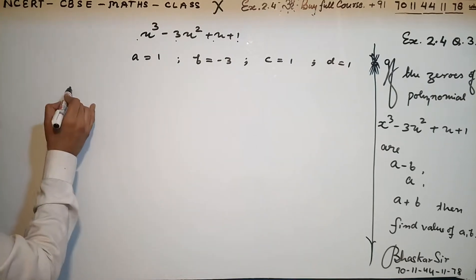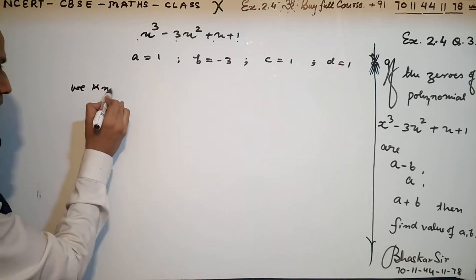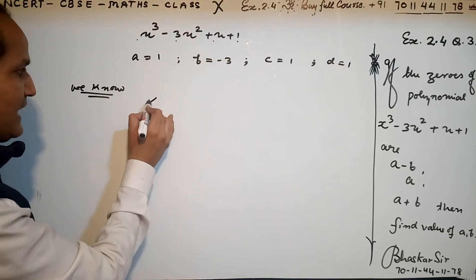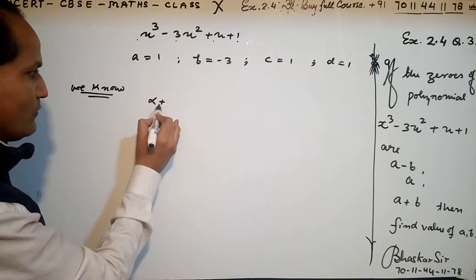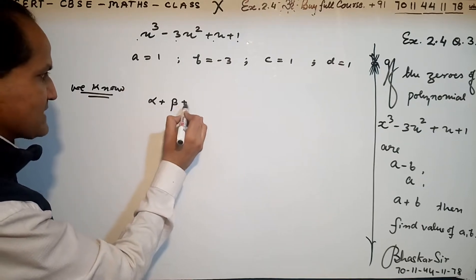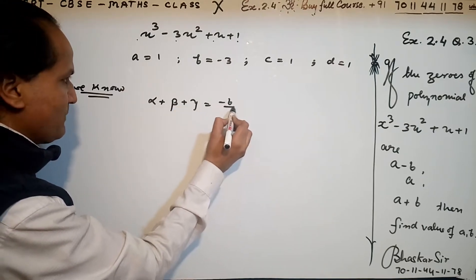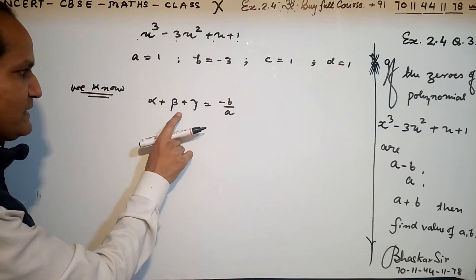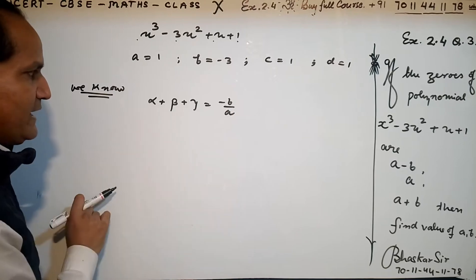We know the zeros of this cubic polynomial are α, β, and γ. The sum of the zeros is α + β + γ = -b/a. You know this formula very well.